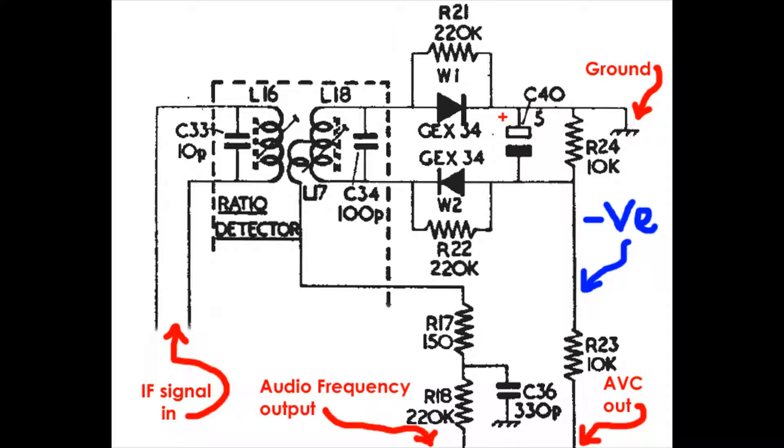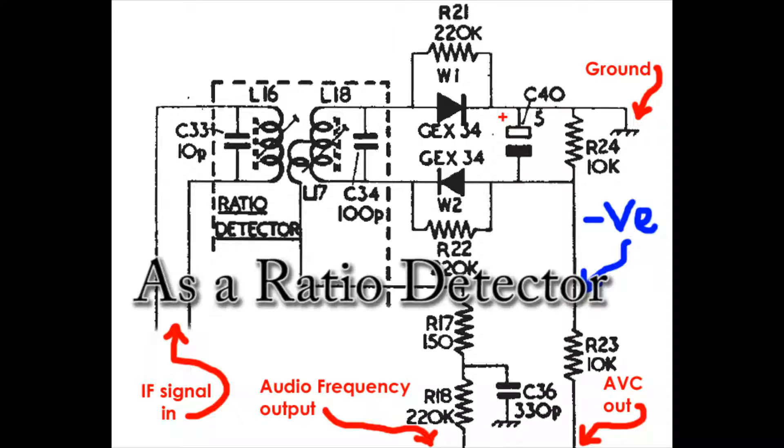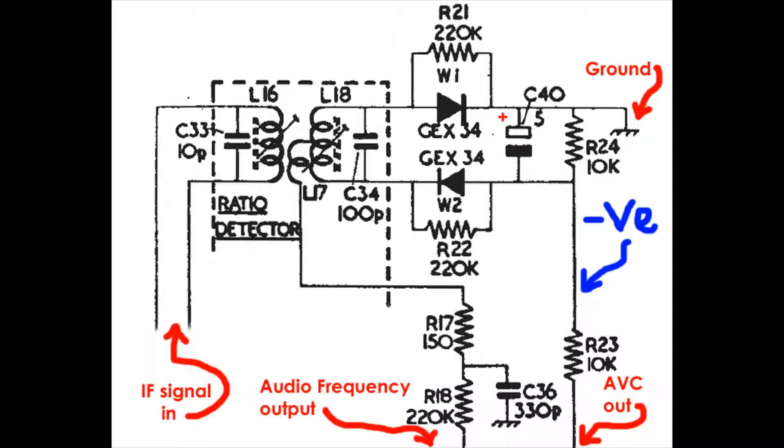To work at optimum performance, the two diodes need to be perfectly matched. And as that's often not the case, the resistors R21 and R22 that shunt the diodes help to match the diodes so that they both have similar forward characteristics.